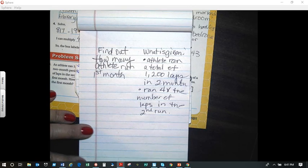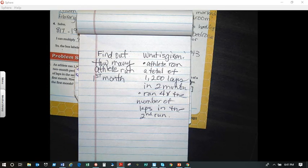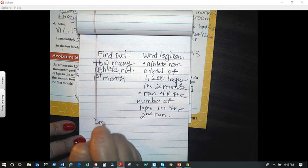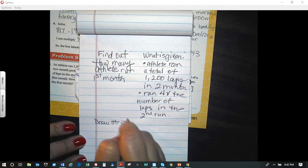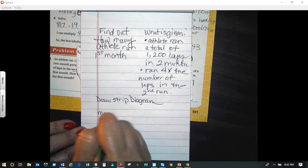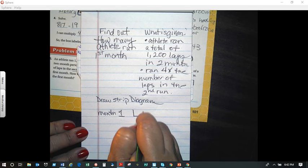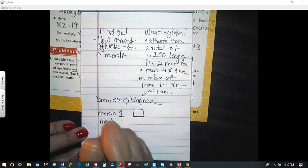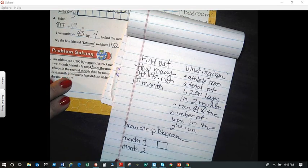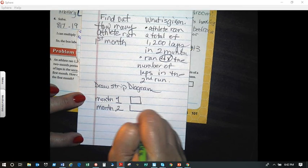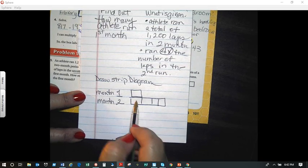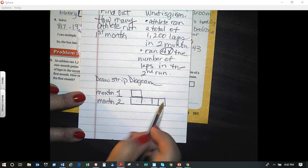He ran a total of 1,200 laps. He ran 4 times the number of laps in the second month. Do we know the number of laps in the first one? No, but that's what we're going to do. So now I'm going to draw my strip diagram. I'm going to call this month one, I'm going to represent it with one square. And then month two, how many squares will I have? Well, I said that he ran 4 times the number of laps in the second one, so I'm going to have 4. And so now I have 1, 2, 3, 4. So what is my divisor?